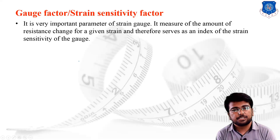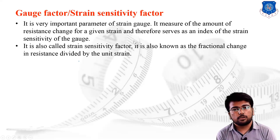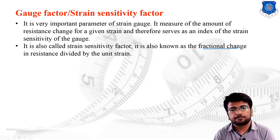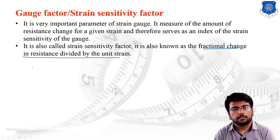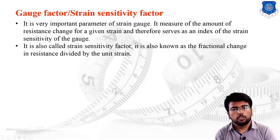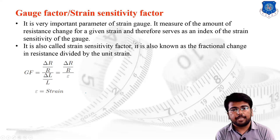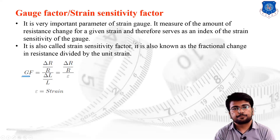The gauge factor is a very important parameter for strain gauges. It measures the amount of resistance change for a given unit strain, and therefore shows an index of the strain sensitivity. It is also called the strain sensitivity factor and is defined as the fractional change in resistance (ΔR/R) divided by the unit strain (ΔL/L). So the gauge factor F = (ΔR/R) / ε, where ε = ΔL/L.